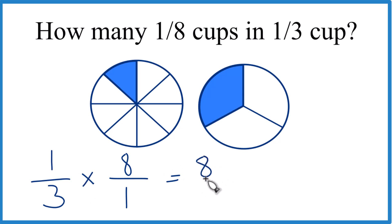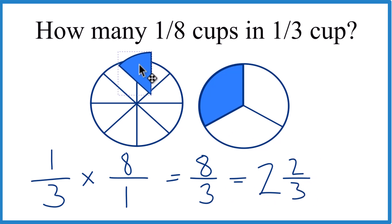One times eight, that's eight. Three times one is three. So the answer is 8/3. But let's convert this to a mixed number. Three goes into eight... let's see, two times three would be six, and we'd have two left over, bring the three across. So it takes 2 and 2/3 of these to make up this 1/3 cup measure.